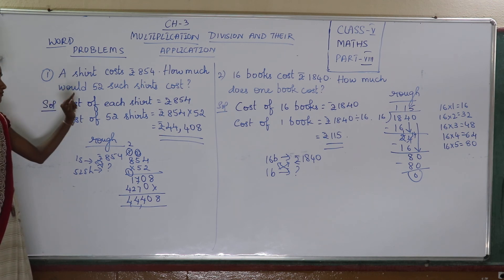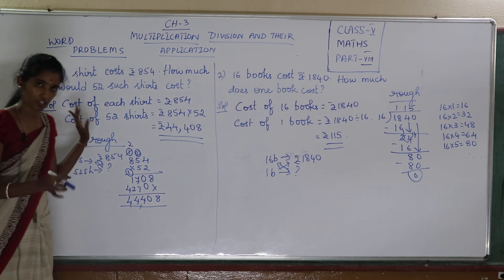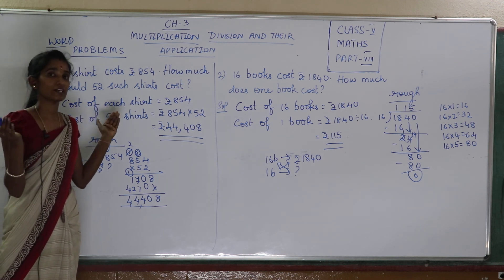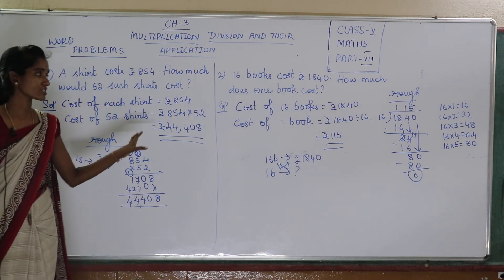If they are asking for single quantity, finding of many will follow multiplication. When they give many and you need to find single quantity, you will go for division. So in your answer book you are completing these sums.